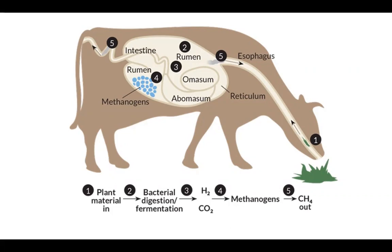This is the second part of Chapter 10, Class 12 Biology - Microbes in Human Welfare. Look at the digestive system of the cow; it has multiple chambers in the stomach, and one of them is called the rumen. In the rumen, you find a bacteria - a symbiotic bacteria that lives in the rumen of the cow.